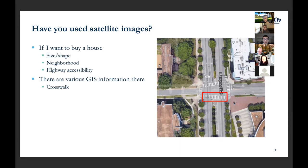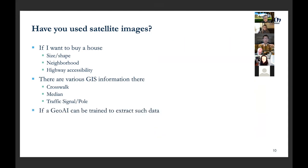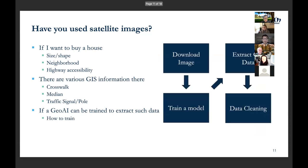Nowadays there are multiple ways we can do this. For example, if we search a location and zoom in, we can see things like crosswalks, traffic signals, and traffic ports. There are also quite useful existing platforms like Google Earth Engine, where we can extract satellite images from different years.